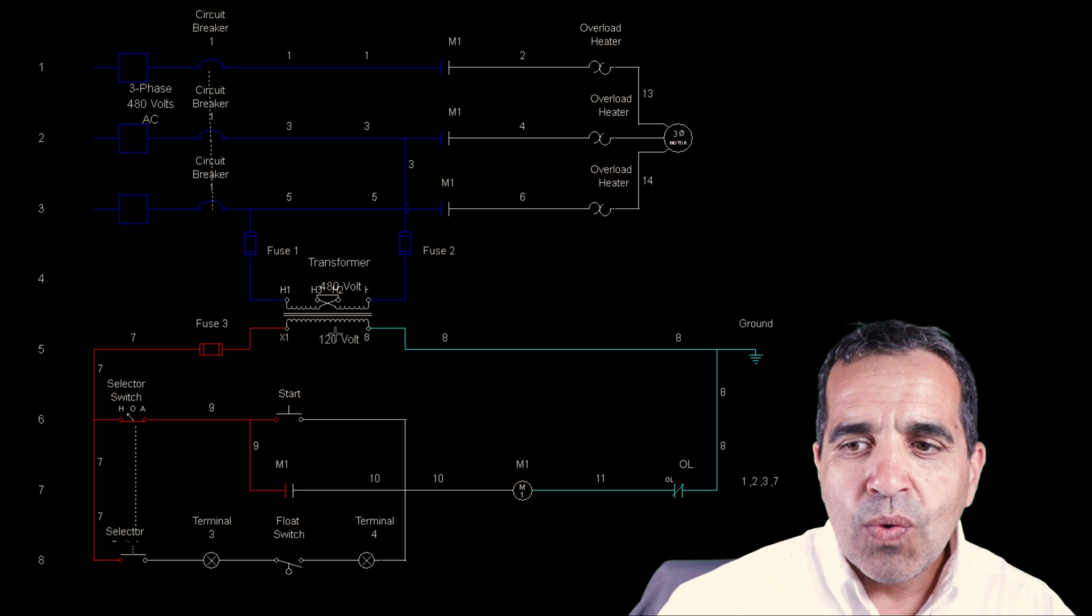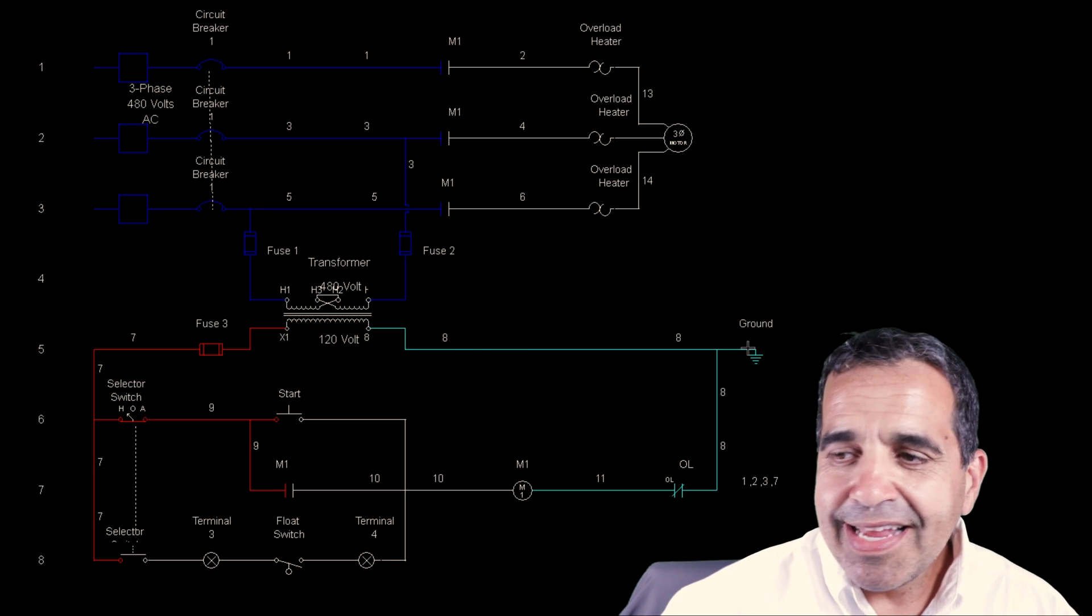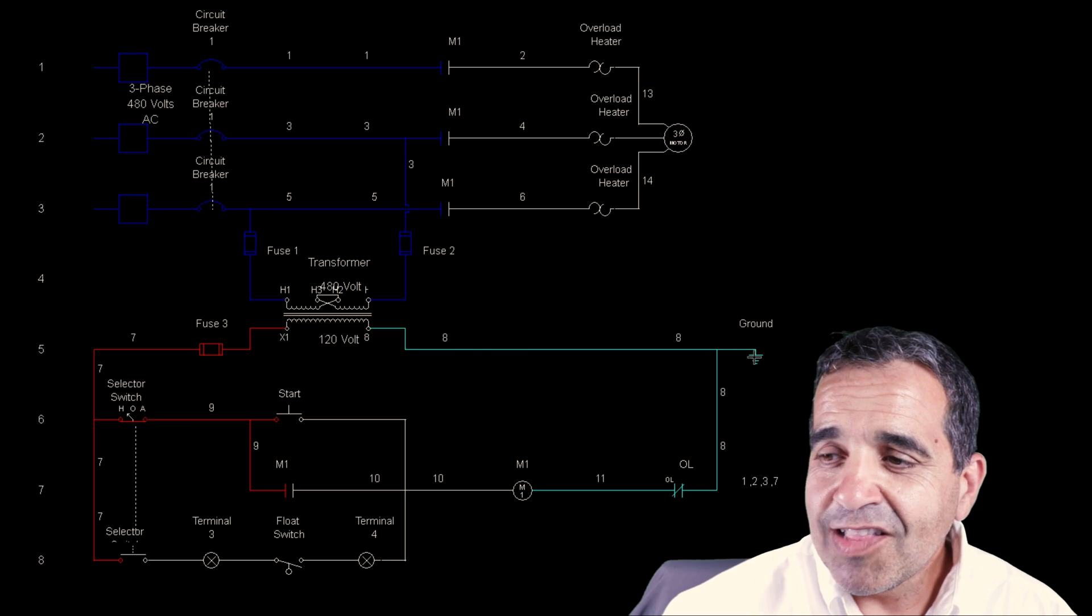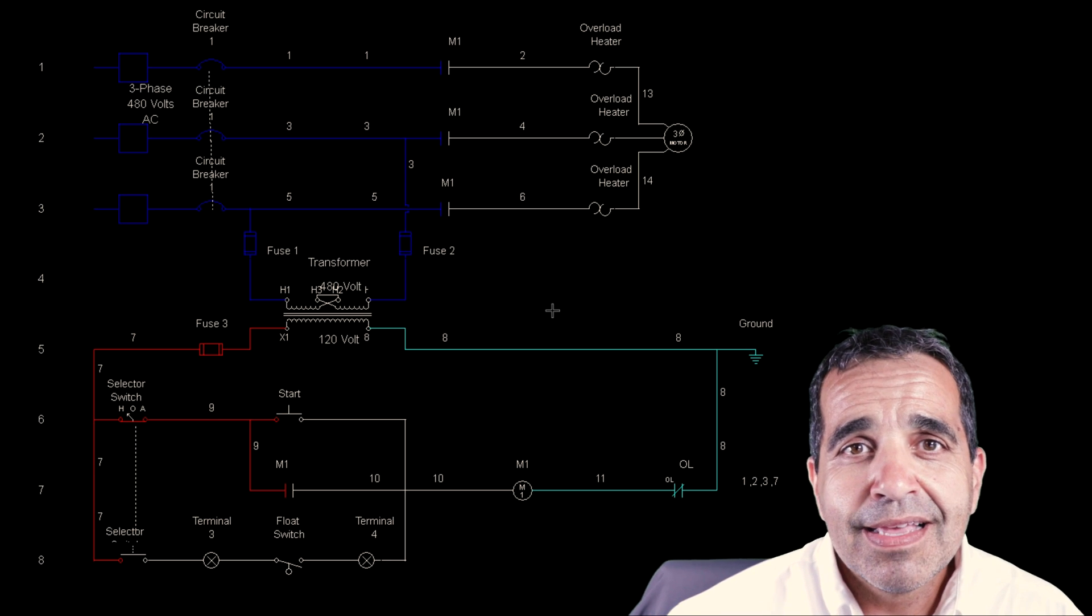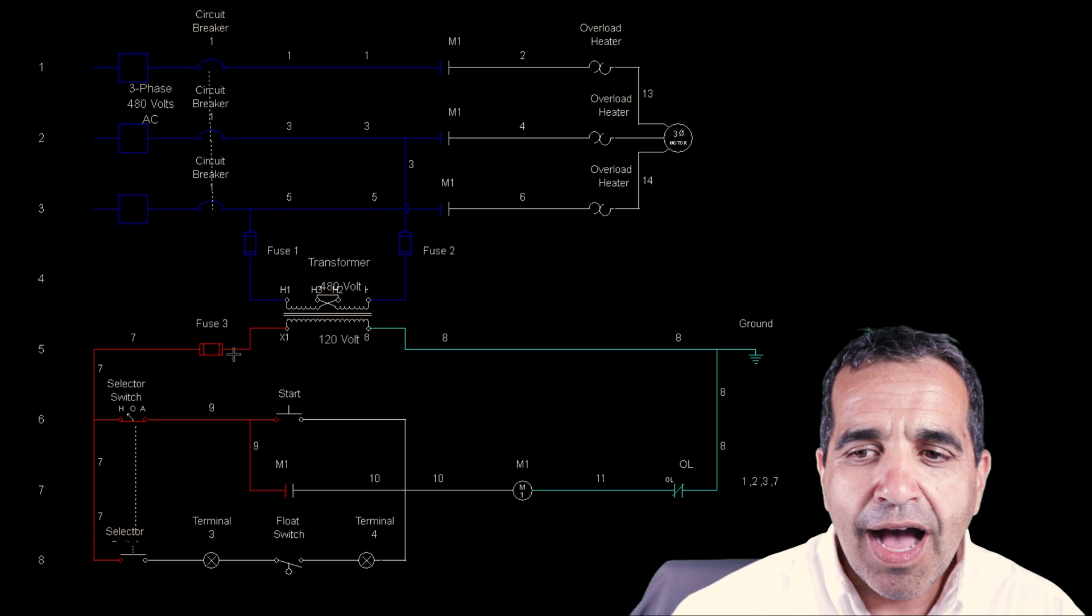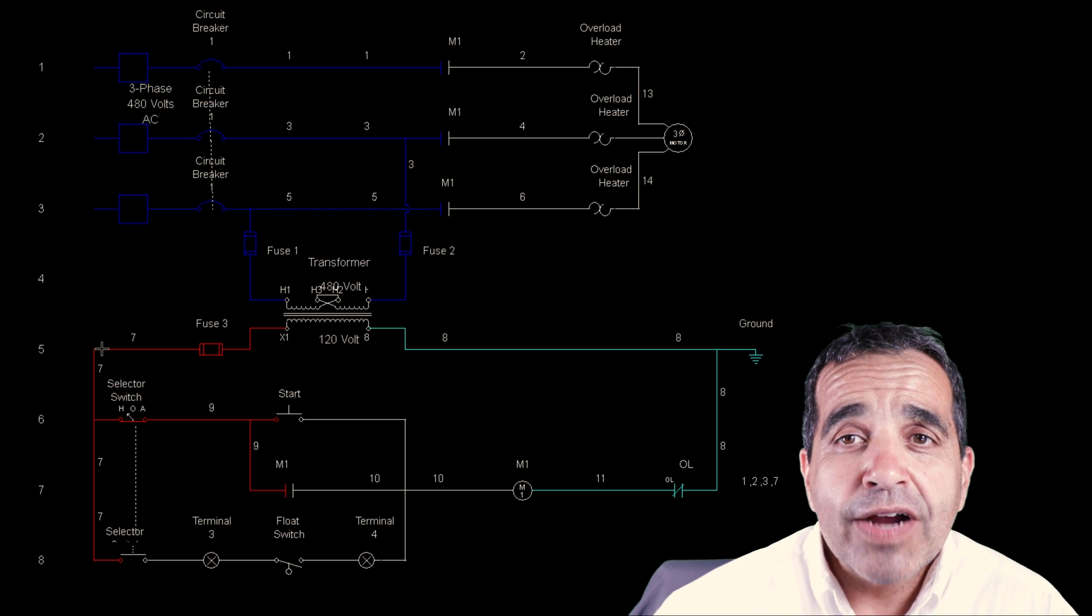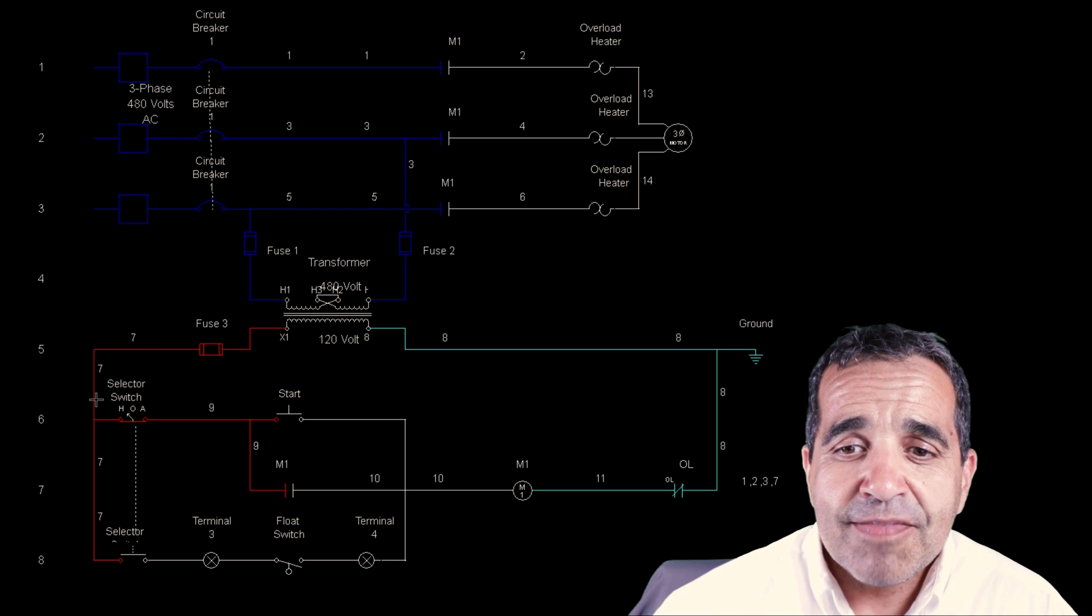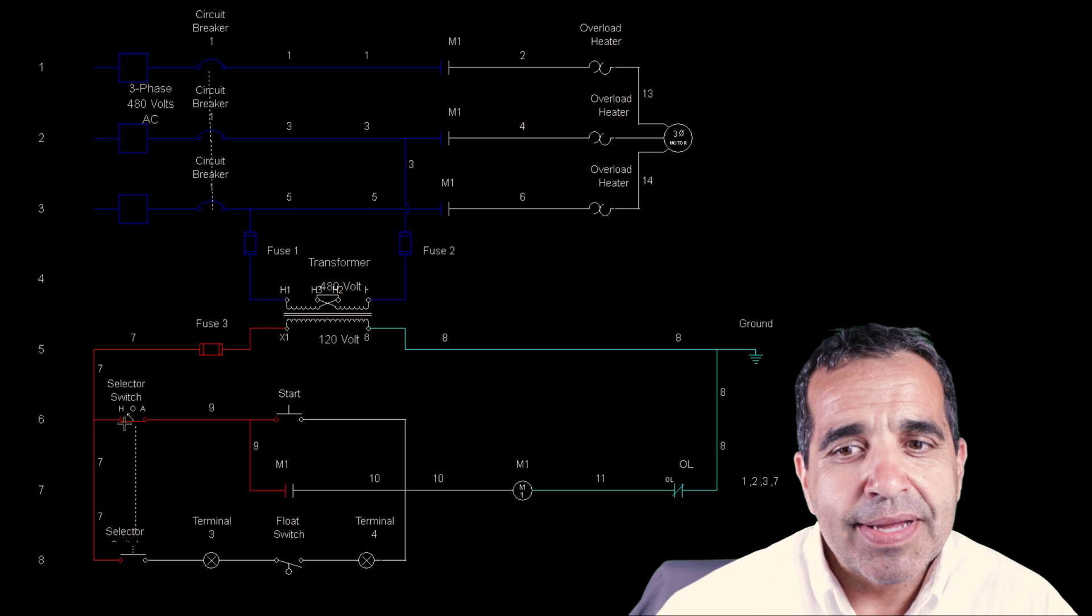On the secondary side we are getting 120 volts. This is our neutral coming from our transformer and it is bonded to ground. And it's bonded to ground because it's a separately derived system. And here's our hot 120 volts coming off our transformer which, if you remember from our three-wire start-stop video, this power circuit fed a maintained normally closed stop button.